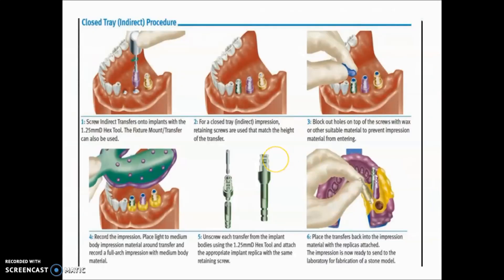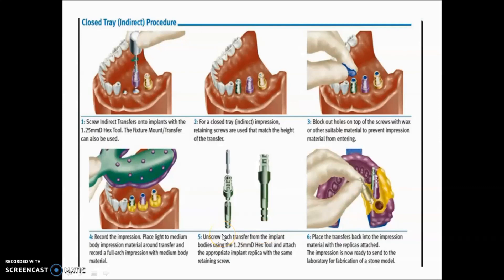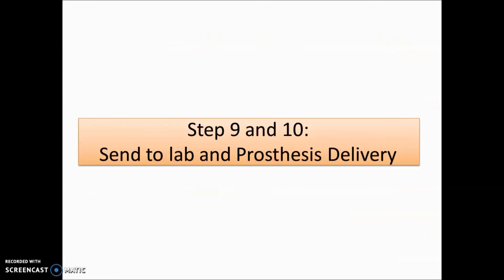The closed tray (indirect) technique: screw the indirect transfer onto the implant using a 1.25 mm hex tool; retaining screws are used matching the height of the transfer. Block the holes on top with wax to prevent impression material from entering. Record the impression using light or medium body material around the transfer and full arch with medium body. Unscrew each transfer using the hex tool, attach the appropriate implant replica with the same retaining screw, place the transfer with replica back into the impression, and send to the lab.